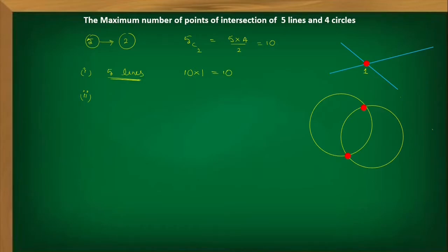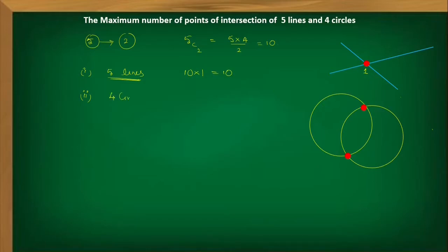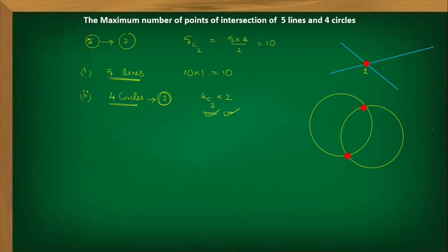How many pairs of circles can be formed from four circles? From four circles, how many ways can you select two circles? That is 4C2, which equals 6. But each pair gives two points, so we multiply: 4C2 × 2 = 6 × 2 = 12. These four circles together will form a maximum of 12 points of intersection.